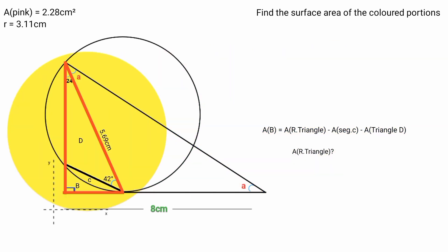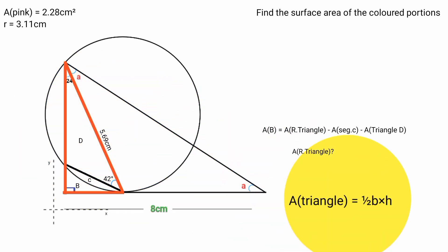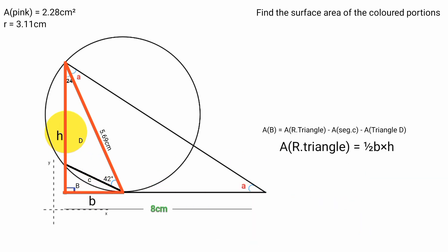What is the area of the right angle triangle? The formula is half base times height. In a right angle triangle, any of the two sides perpendicular to each other can be the base or the height. So let's say this is the base and this is the height. We need the base and height of the triangle.